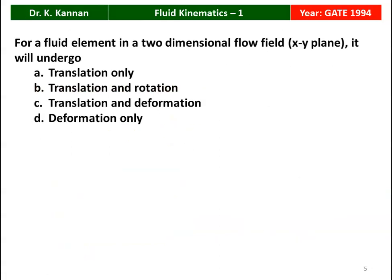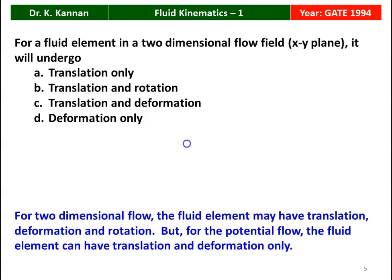Next question, again from the 1994 question paper. For a fluid element in a two-dimensional flow field, xy plane, it will undergo: translation only, translation and rotation, translation and deformation, or deformation. For a two-dimensional flow in the xy plane, the fluid element may have translation, deformation, and rotation, but for potential flow, the fluid element can have translation and deformation only, not rotation. So the answer is translation and deformation, option C.